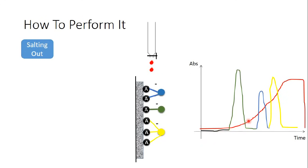...the salt will compete with the proteins for substance A. The protein with one binding group will be eluted first, then the protein with two binding groups, then the one with three or more. So proteins are eluted gradually as we increase the salt concentration. This is called salting out.